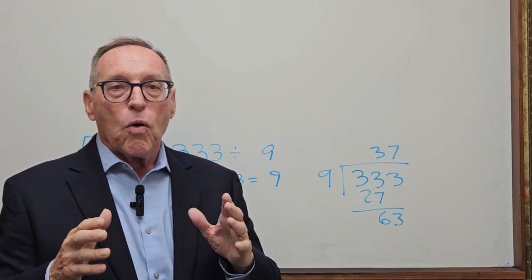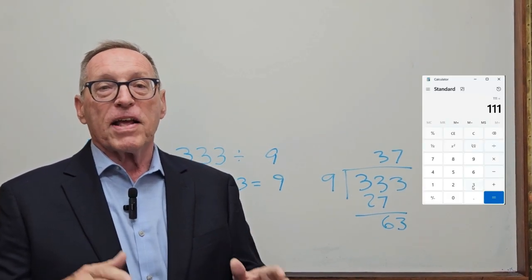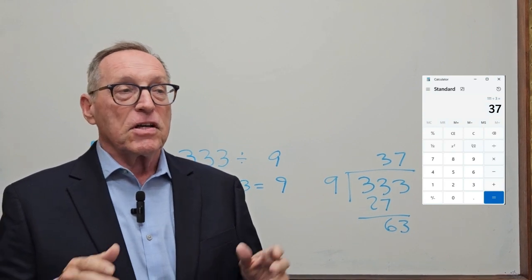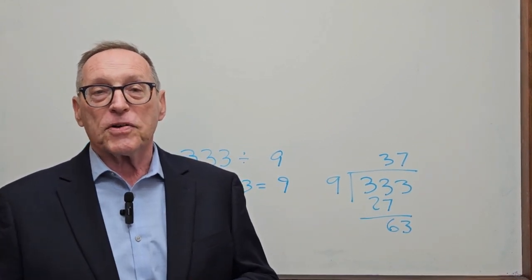Well, what's interesting is if you take 1, 1, 1 divided by three, you get 37. 2, 2, 2 divided by six, you get 37.